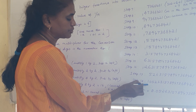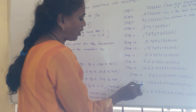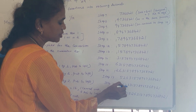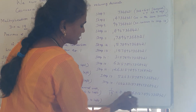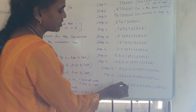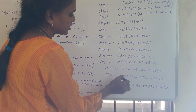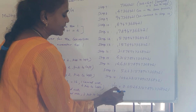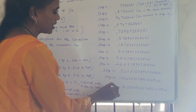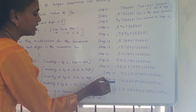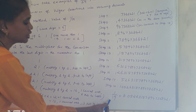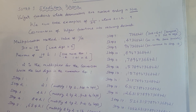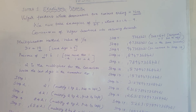So the recurring decimal of the vulgar fraction 1 by 19 is 0.052631578947368421... with all the values repeating. To find the recurring decimal of a vulgar fraction whose denominator ends with 9, we can use the first Vedic Mathematics sutra, Ekadhikena Purvena. Thank you.